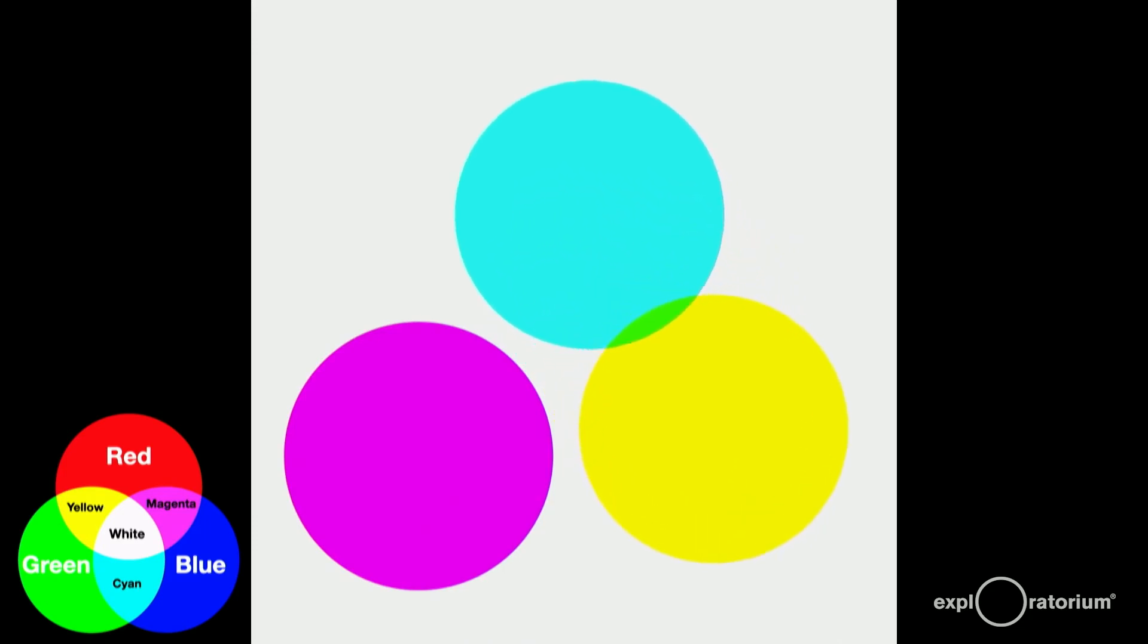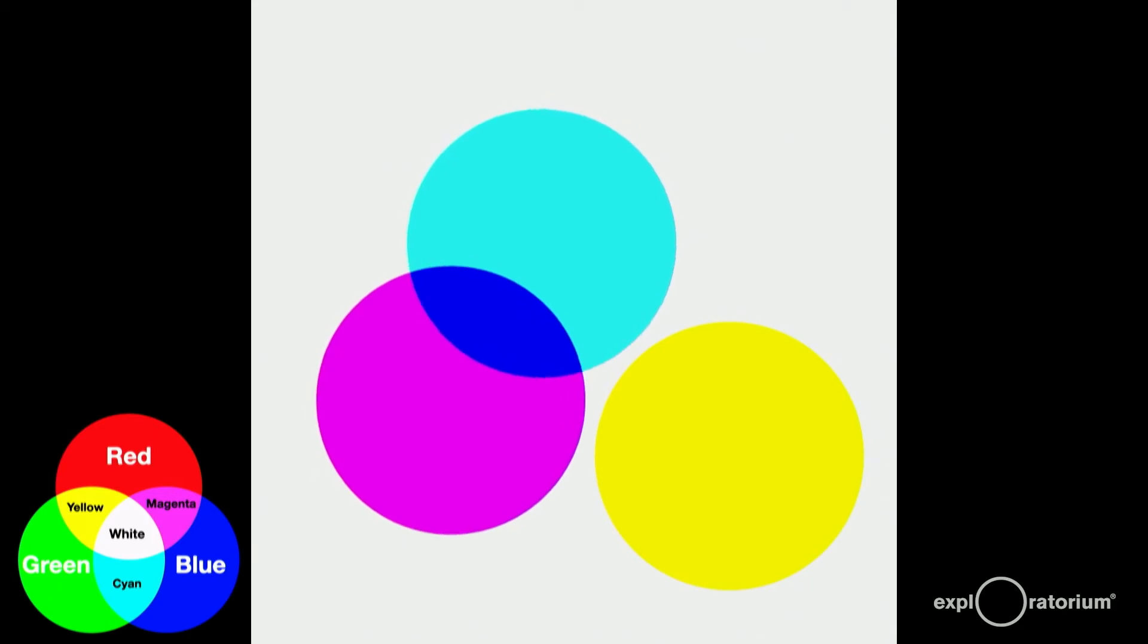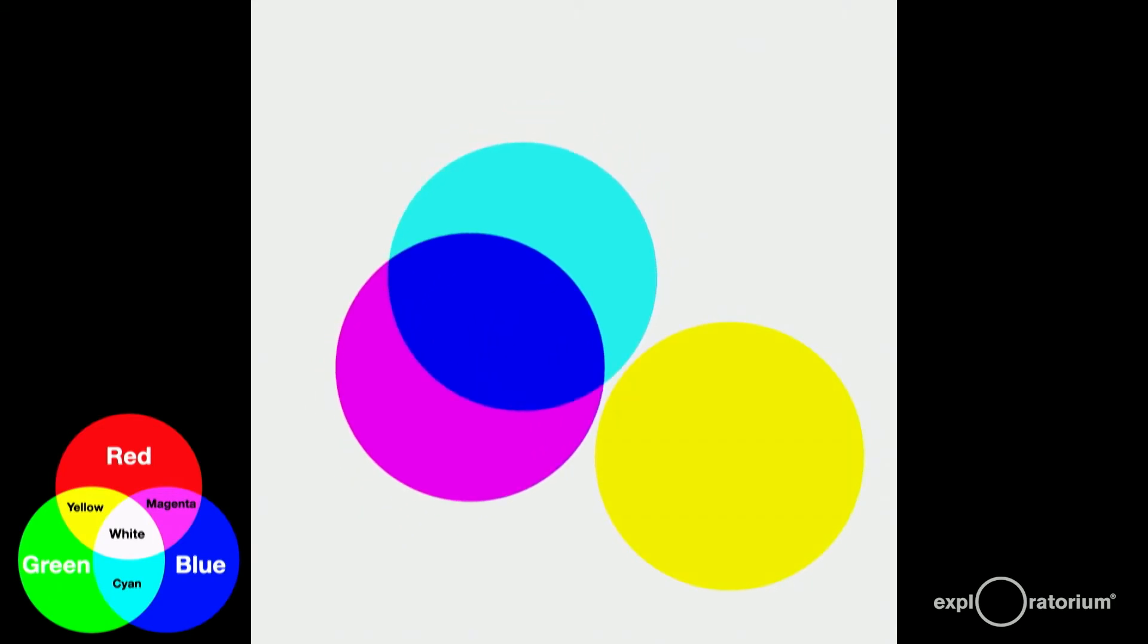Only one more combination left. Let's combine cyan and magenta. Again, cyan subtracts red, and magenta subtracts green. I'm sure you're already predicting that the result we're going to get is blue, and you'd be right.